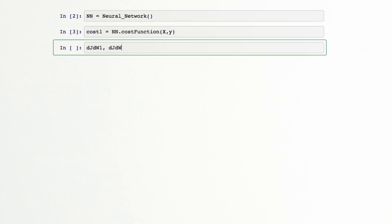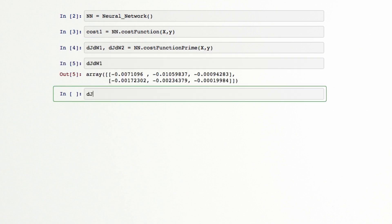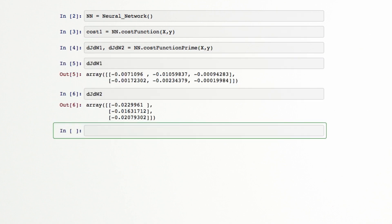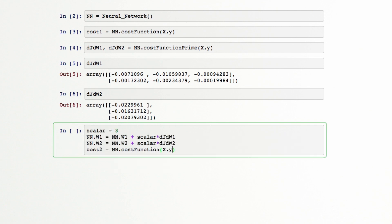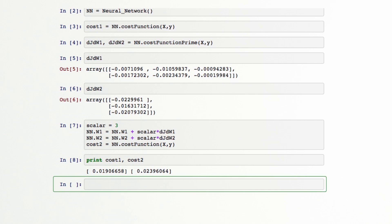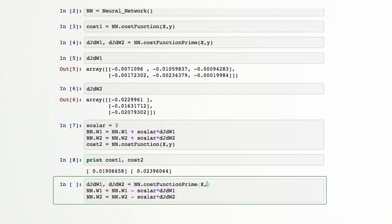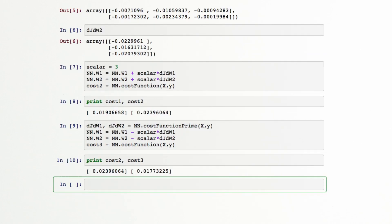So how should we change our w's to decrease our cost? We can now compute djdw, which tells us which way is uphill in our 9-dimensional optimization space. If we move this way by adding a scalar times our derivative to all of our weights, our cost will increase. And if we do the opposite, subtract our gradient from our weights, we will move downhill and reduce our cost. This simple step downhill is the core of gradient descent and a key part of how even very sophisticated learning algorithms are trained.